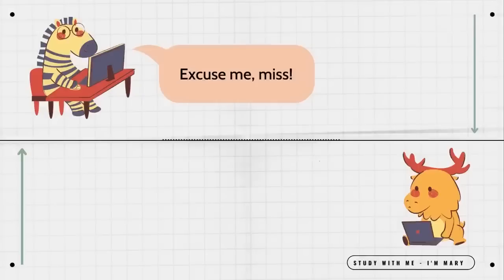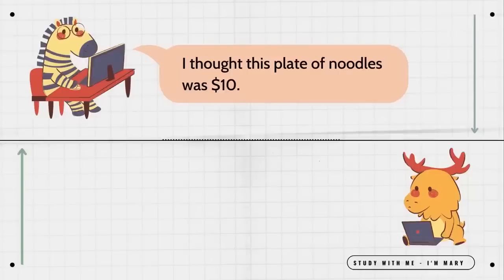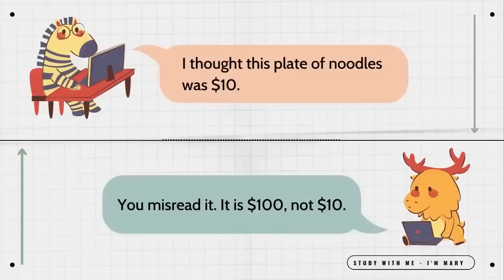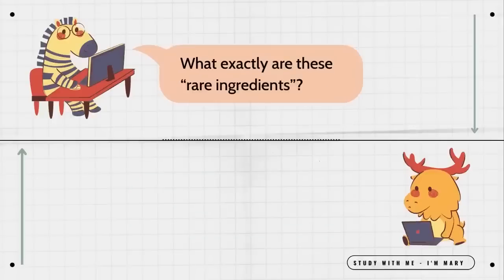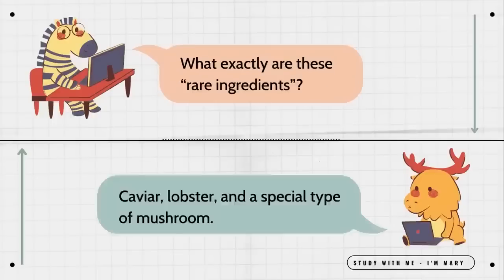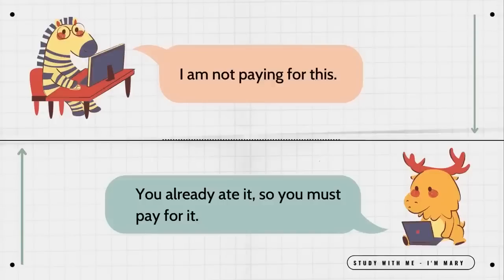Excuse me, miss. Yes? What can I do for you? This bill is incorrect. It is indeed correct. I thought this plate of noodles was $10. You misread it. It is $100, not $10. Why is it so expensive? There are rare ingredients in it. What exactly are these rare ingredients? Caviar, lobster, and a special type of mushroom. I am not paying for this. You already ate it, so you must pay for it.